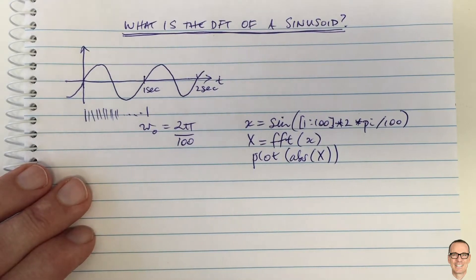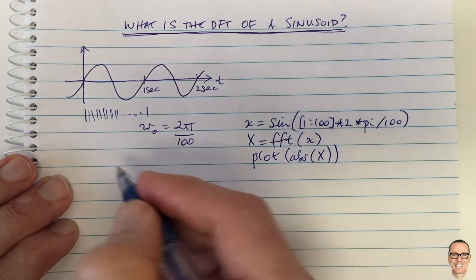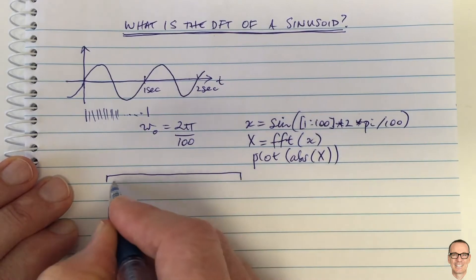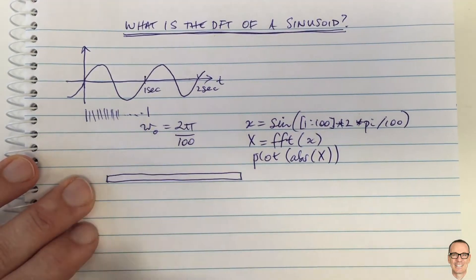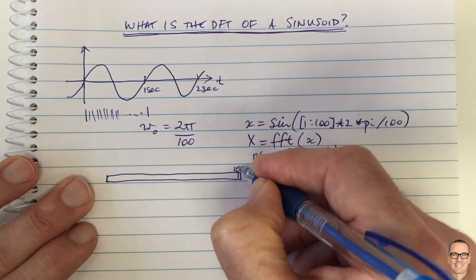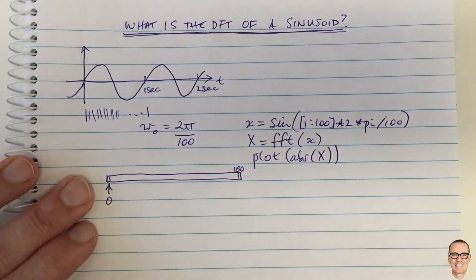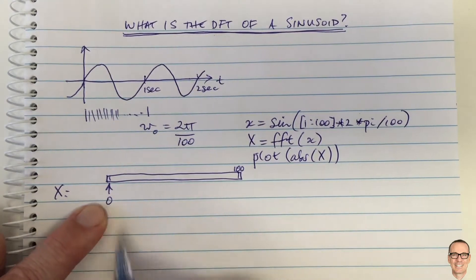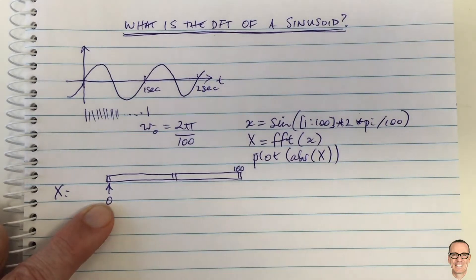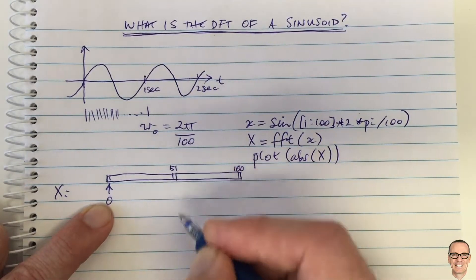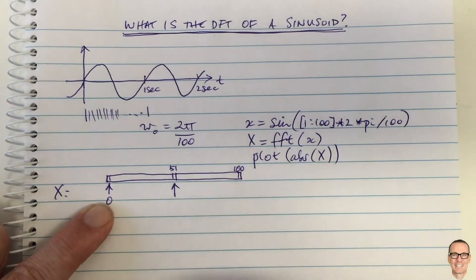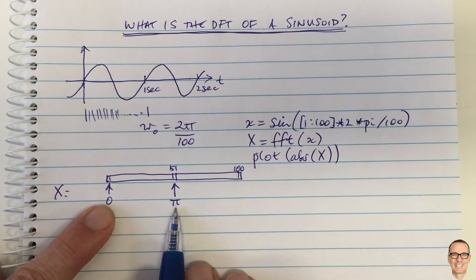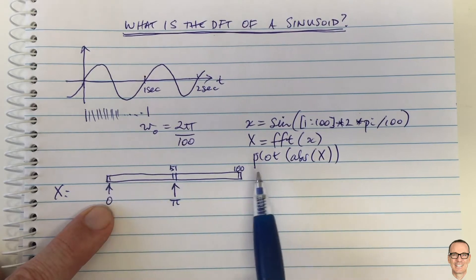What would we expect to see? The DFT output vector is as long as the number of samples taken — in this case, 100 elements long. The first element (index 1) is DC, representing zero frequency. The element at position 51 (one more than halfway) corresponds to the Nyquist frequency, which in angular frequency is π.